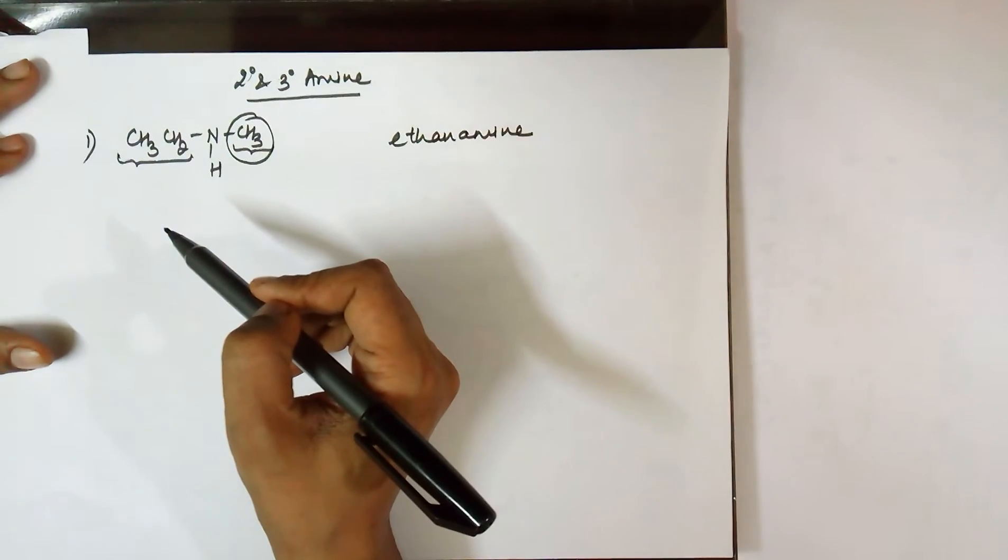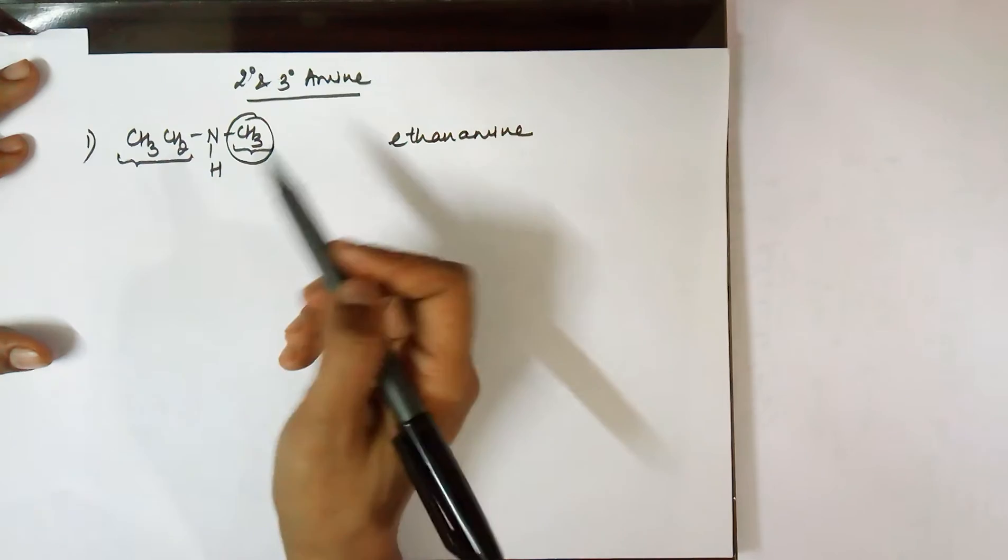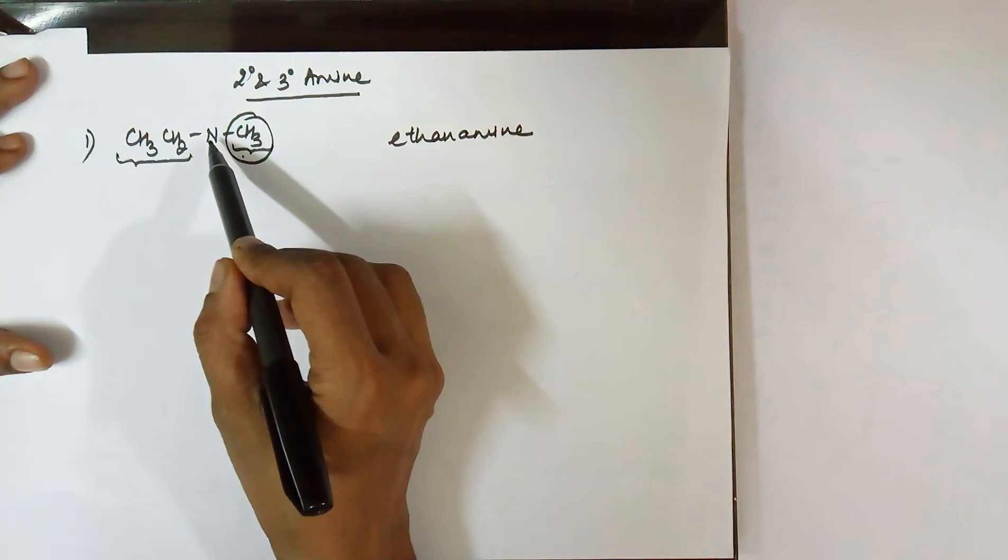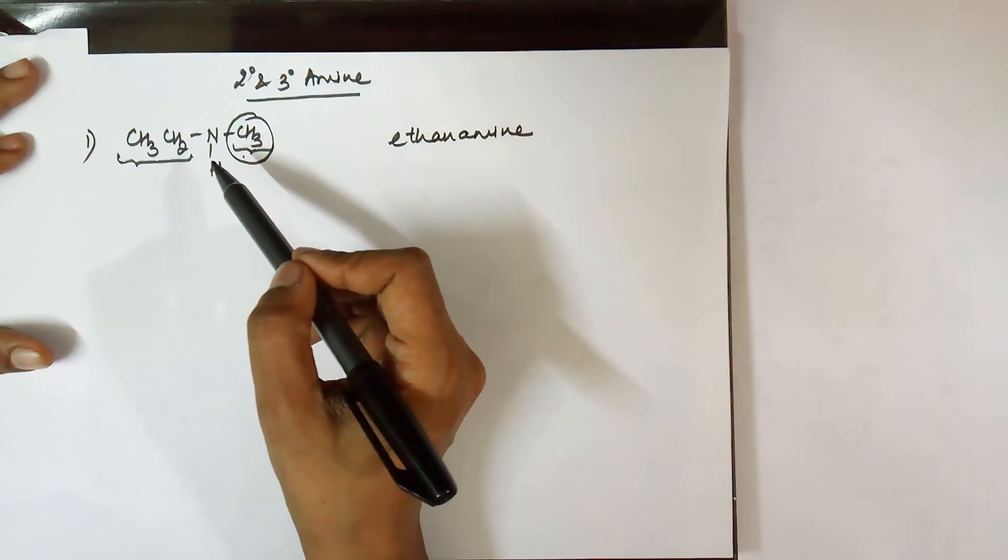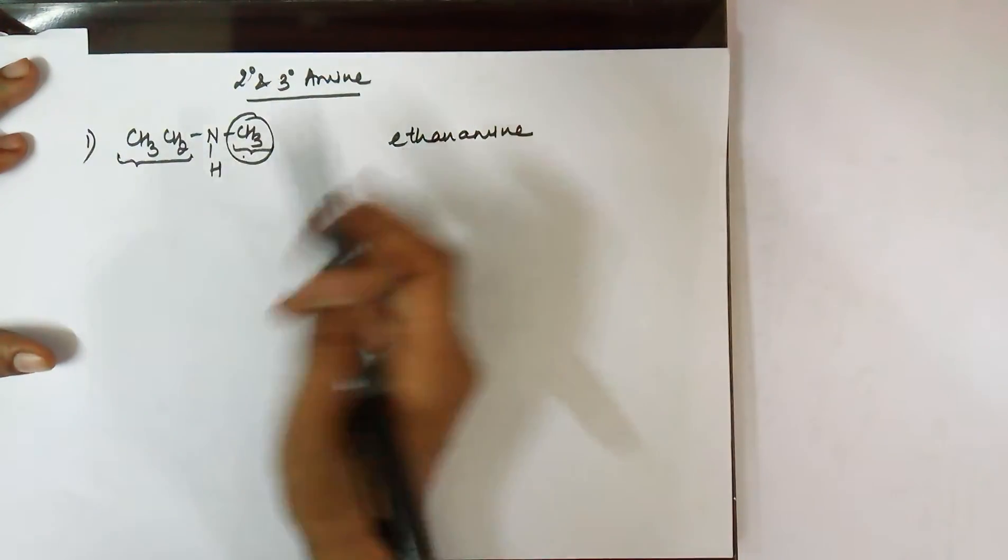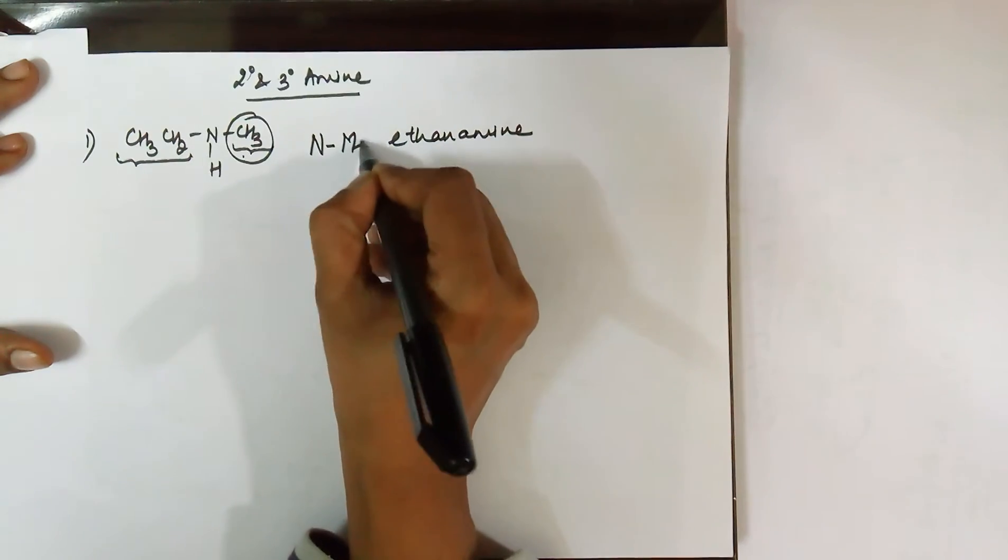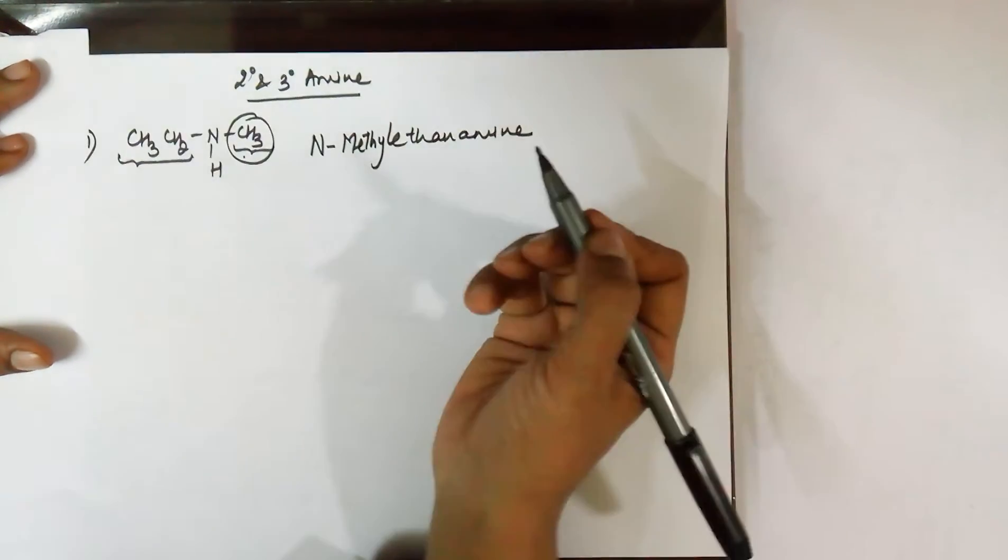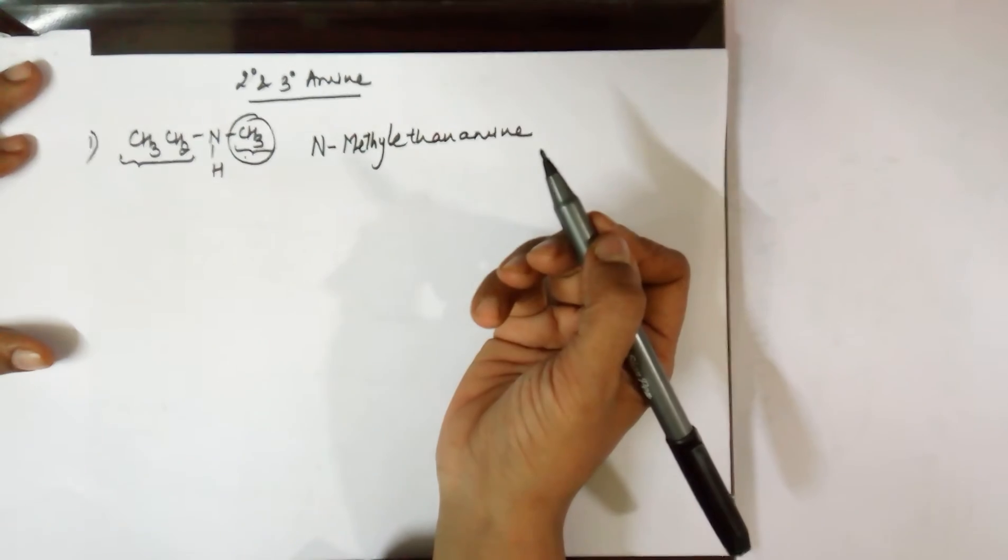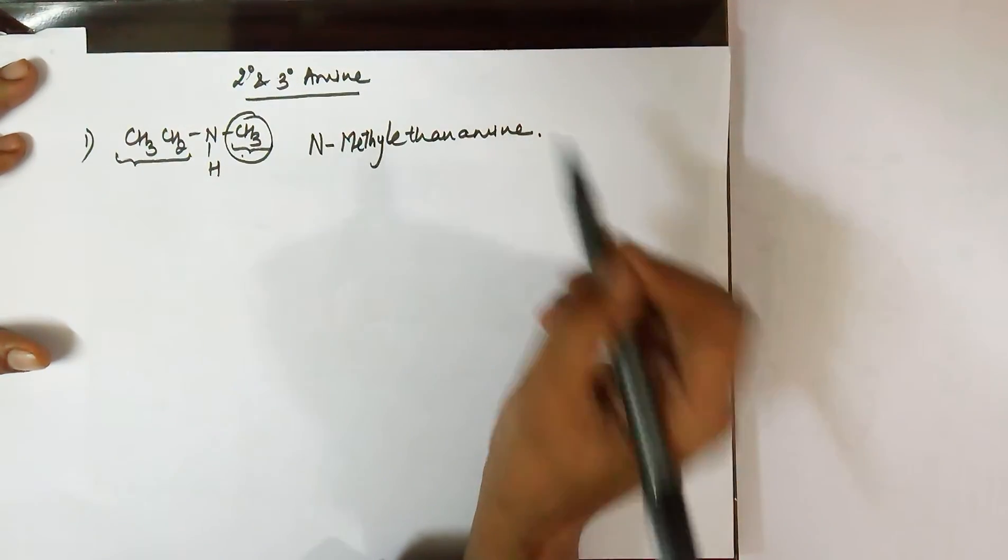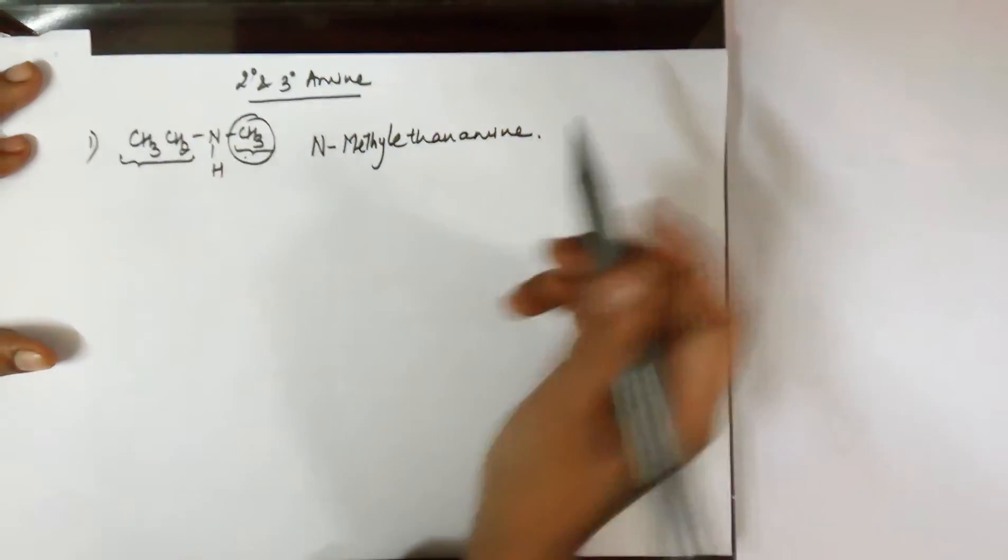Normally we write it as 2-methyl, 3-methyl. The reason is, methyl group is attached to a carbon and you are numbering the carbons. This time, the methyl group is attached to a nitrogen, and nitrogen has no number. So in such cases, we write it as N-methyl, where N is being taken as the numbering. So N-methyl ethanamine becomes the name of this particular compound.